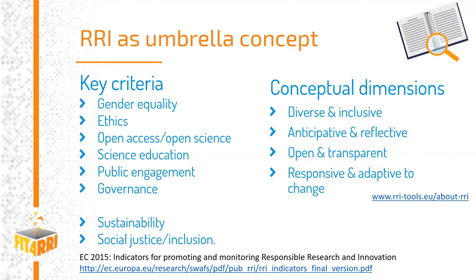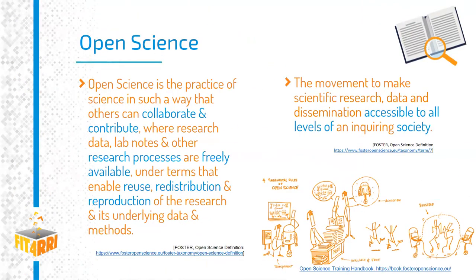Open science, taken from the FOSTER website definition, is the practice of science in such a way that others can collaborate and contribute because the research data, lab notes, and all other research processes are freely available, and the terms under which they are available allow reuse, redistribution and reproduction. In short, it is the movement to make scientific research data and dissemination accessible to all levels of an inquiring society. The four fundamental principles of open science are: transparency, accessibility, availability and free, and reusable.